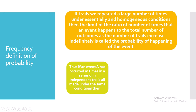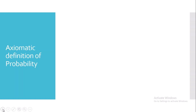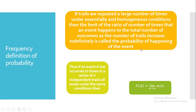If an event A has occurred m times in a series of n independent trials conducted under homogeneous conditions, then we say that the limit as n tends to infinity of the frequency ratio m by n is equal to the probability of the happening of event A.